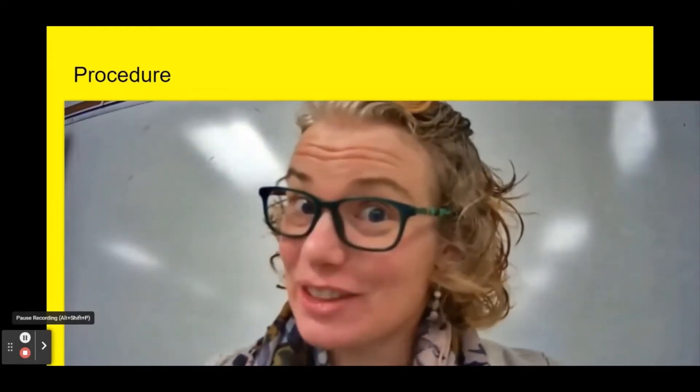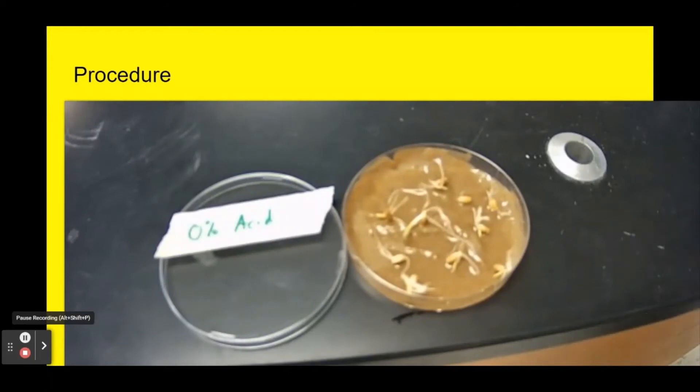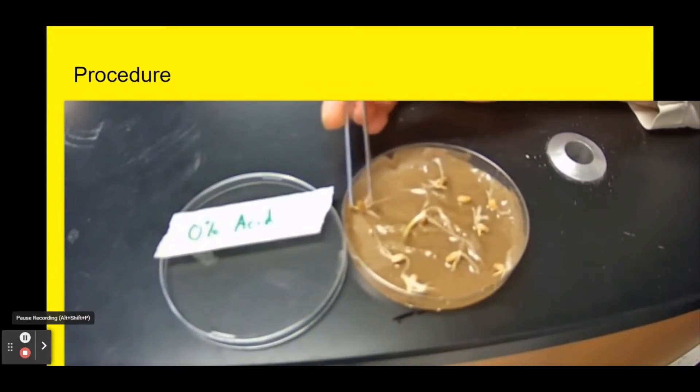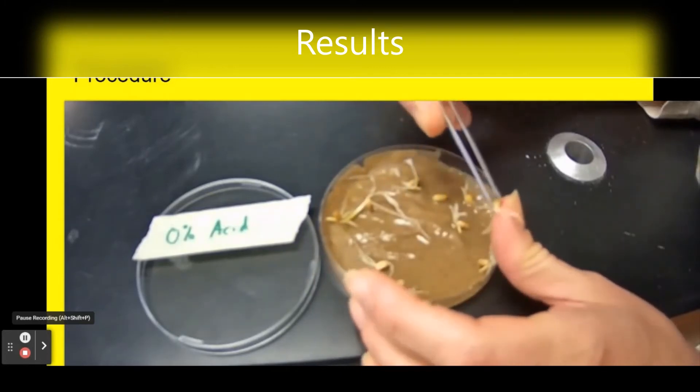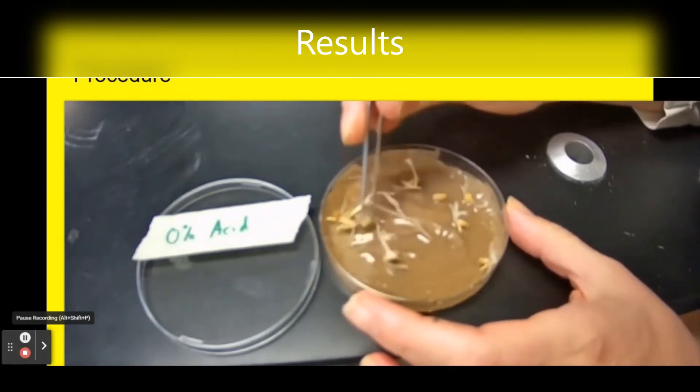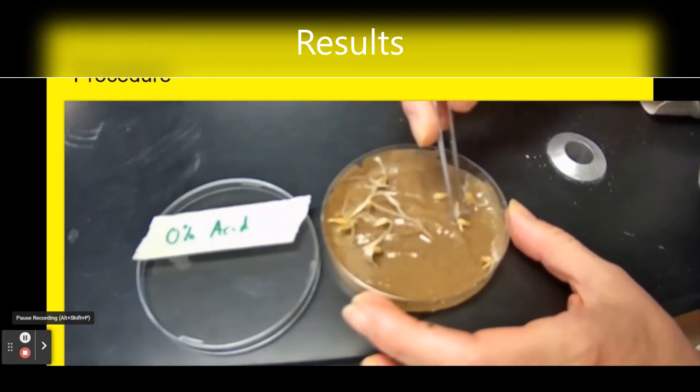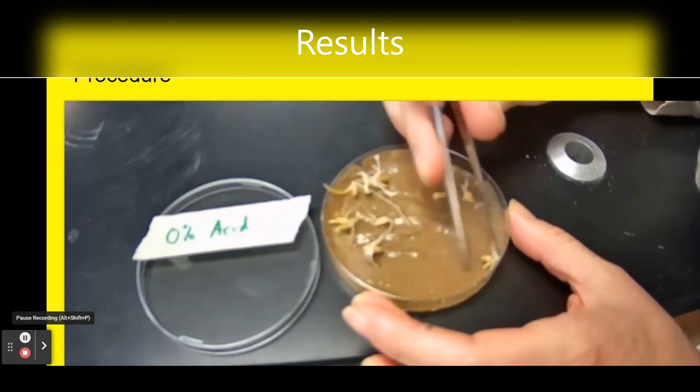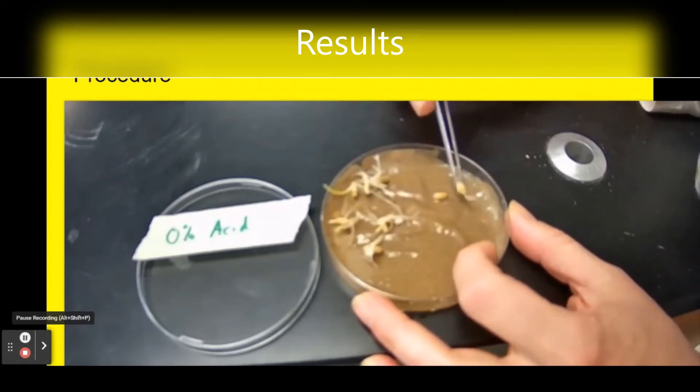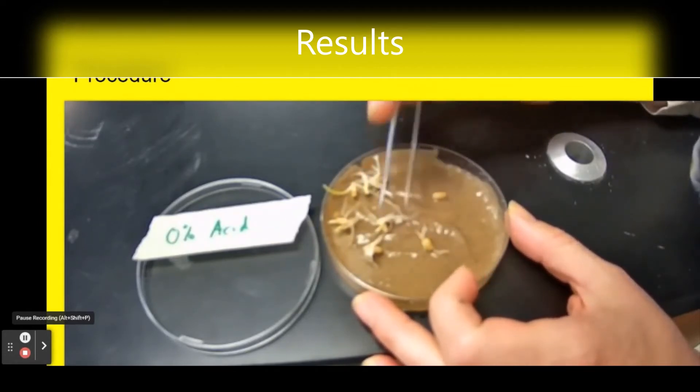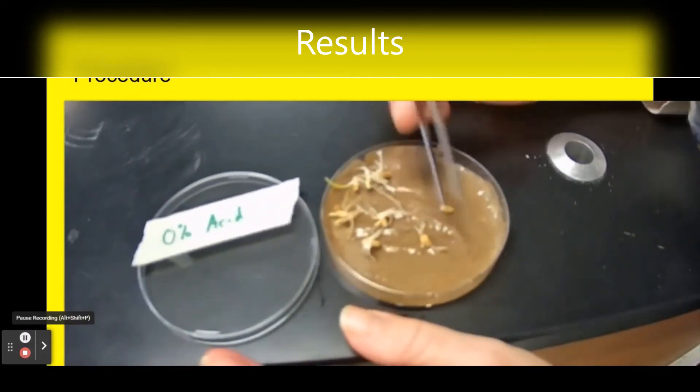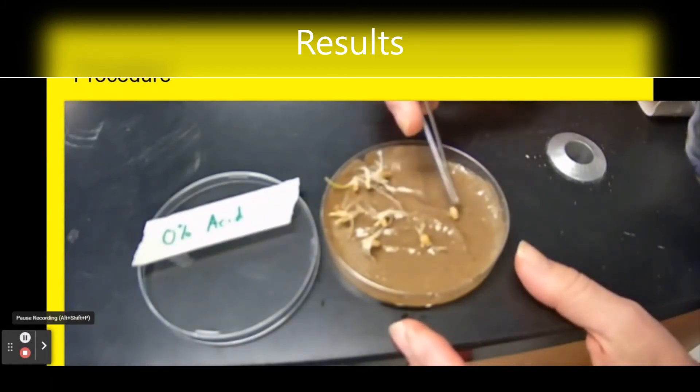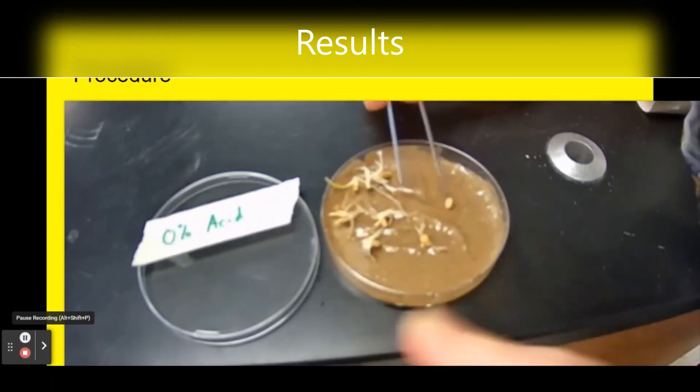Okay, it's been three days, let's look at the results. Here is our zero percent acid tray, so this is just pure water, our control group. We have eight, nine that have sprouted and we've got one that did not sprout. So nine germinated, one did not germinate.